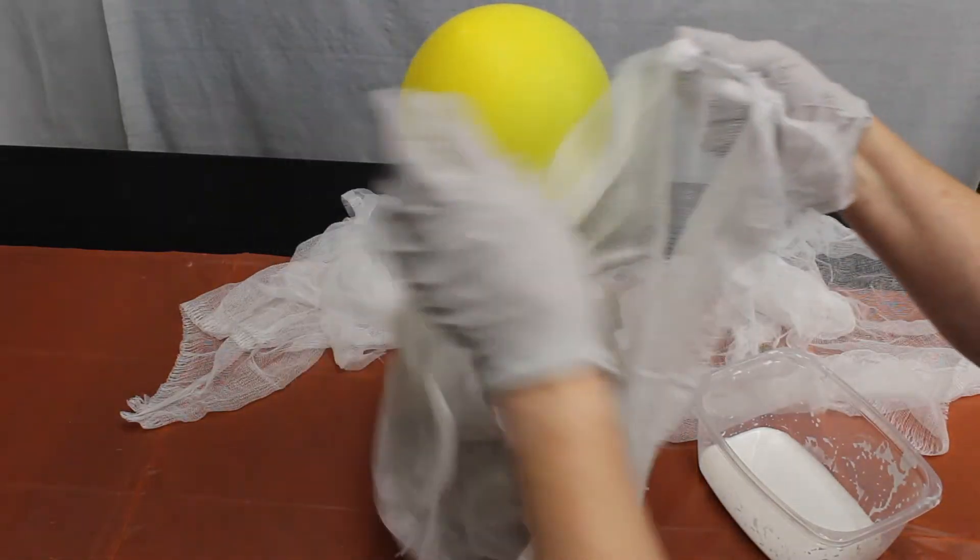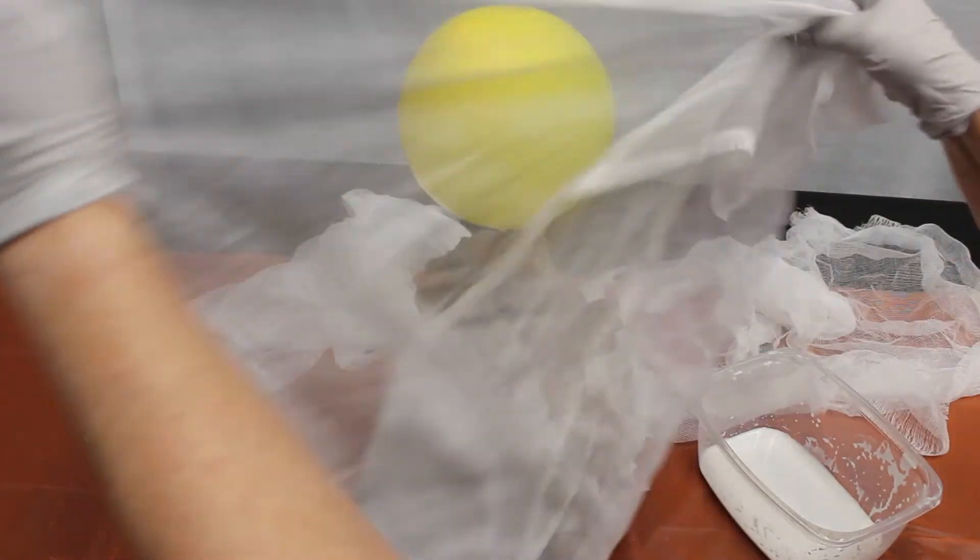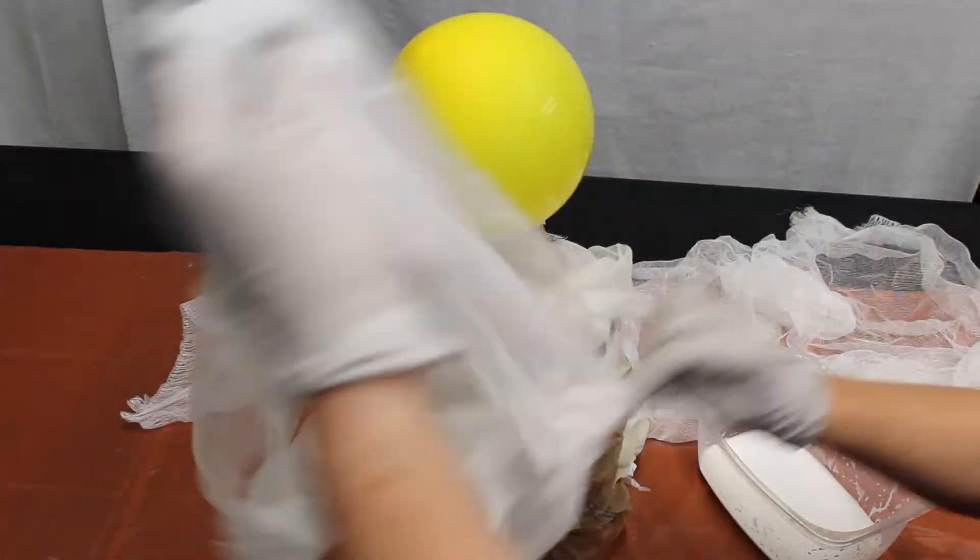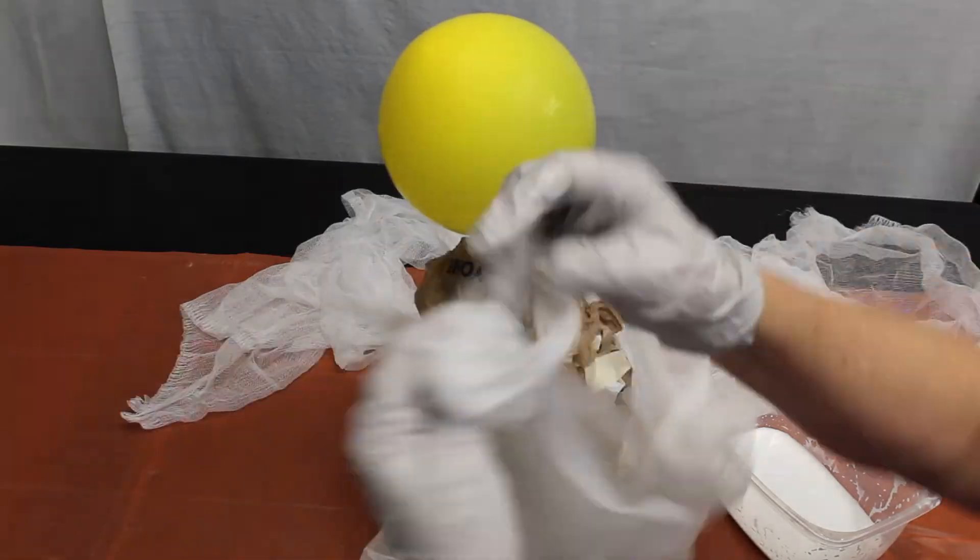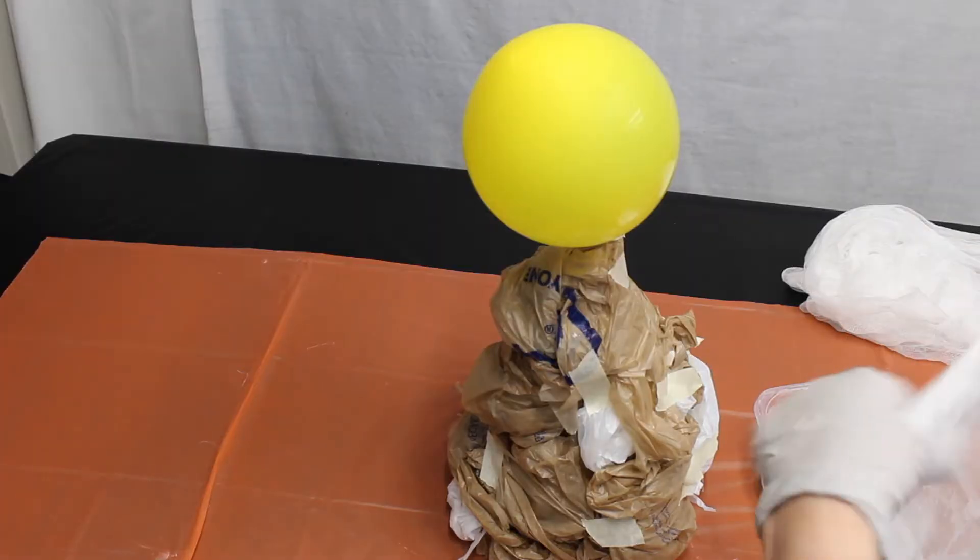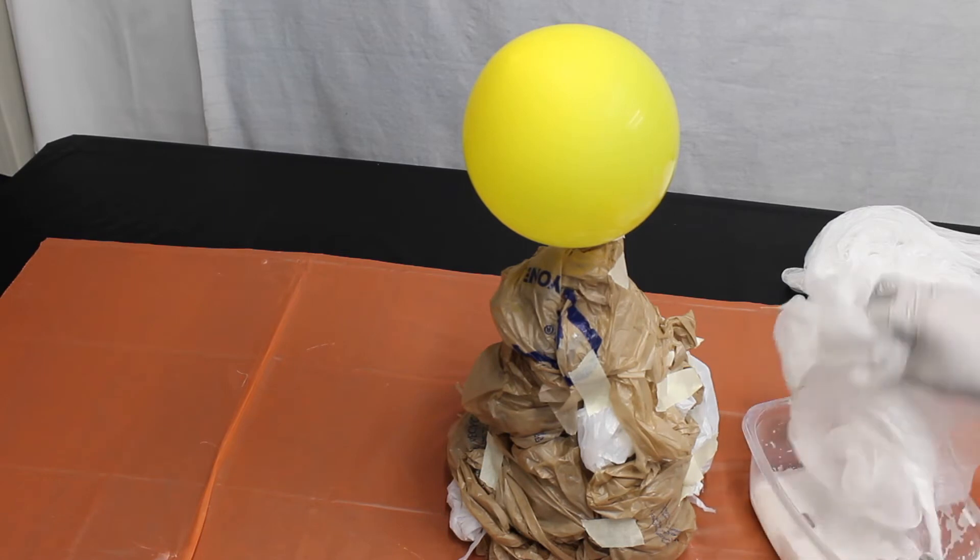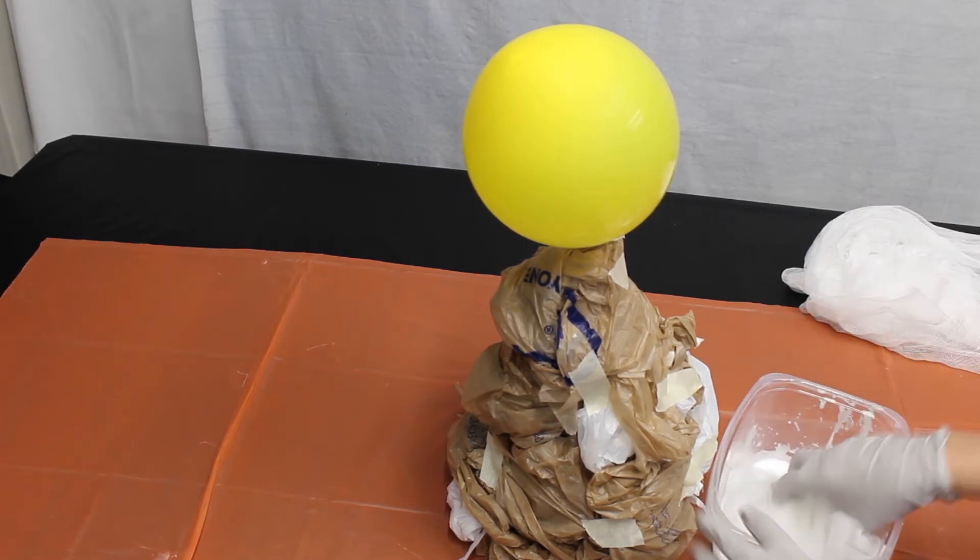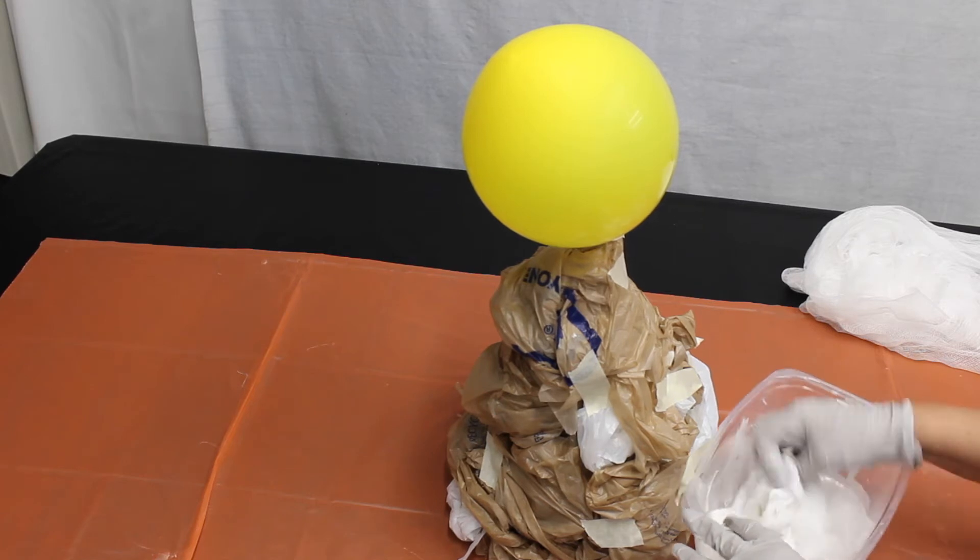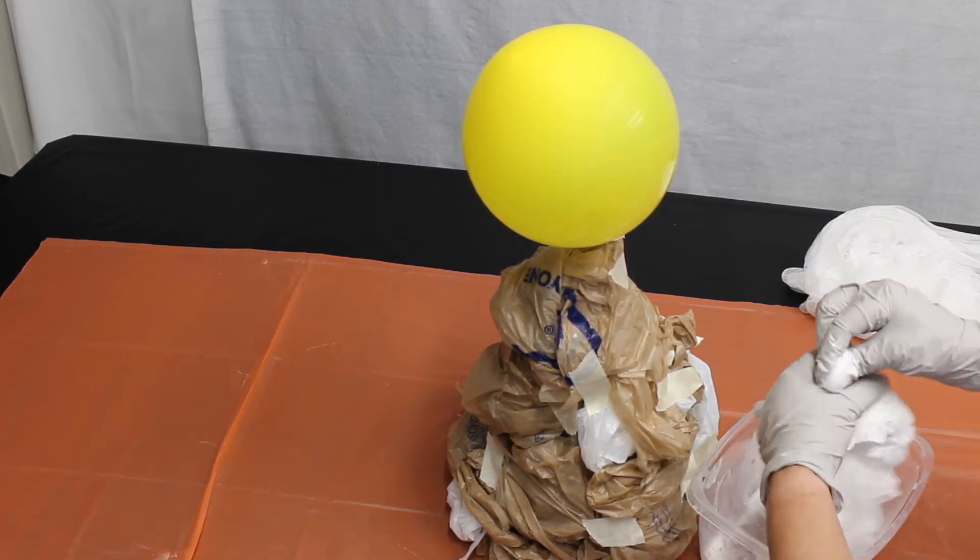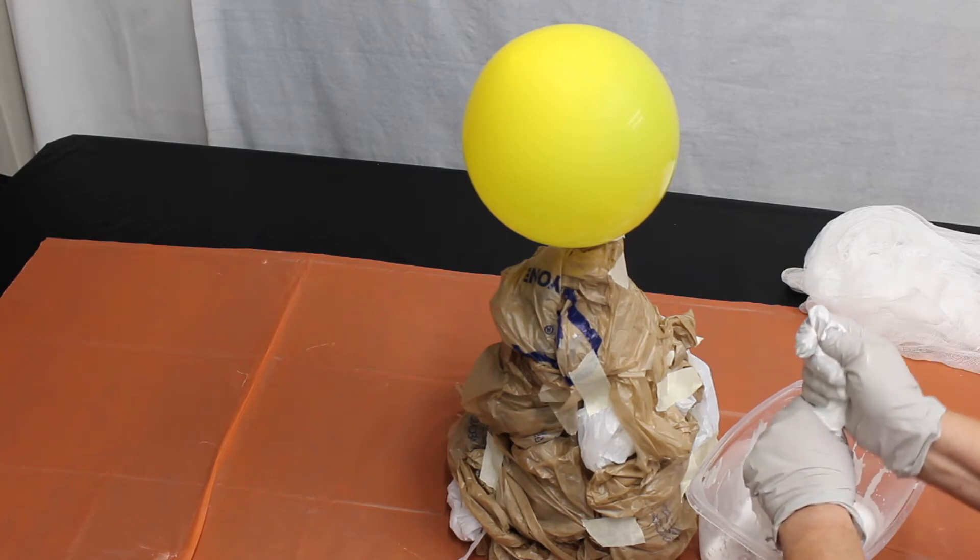You're going to separate the cheesecloth so you've got a single layer. I'm using gloves to dip this cheesecloth into the glue mixture. I want to get it nice and soaking, nice and wet, but I also want to drain it out so I want to squeeze it.